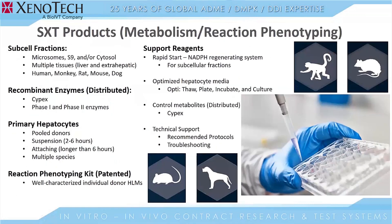In addition to the reaction phenotyping services that we offer, we also offer a number of products at Sekisui Xenotech so you can conduct these experiments in your own laboratory. For test systems, these include subcellular fractions, recombinant enzymes, primary hepatocytes, and we also offer a reaction phenotyping kit. In addition to these test systems, we have support reagents that go along with all these test system types. And additionally, we offer technical support and consulting services.